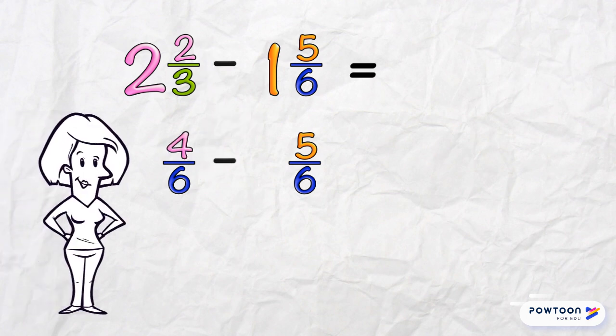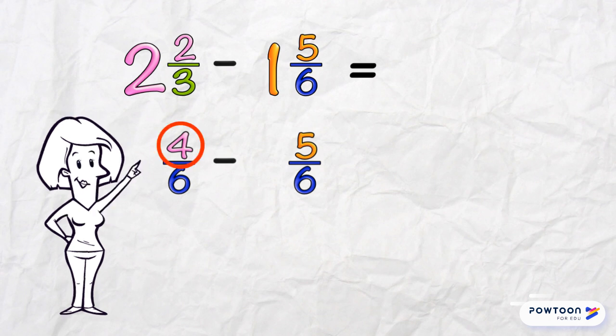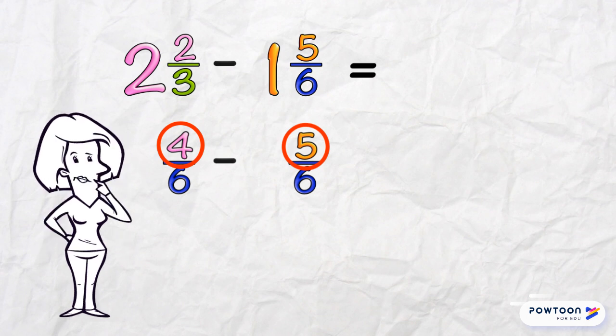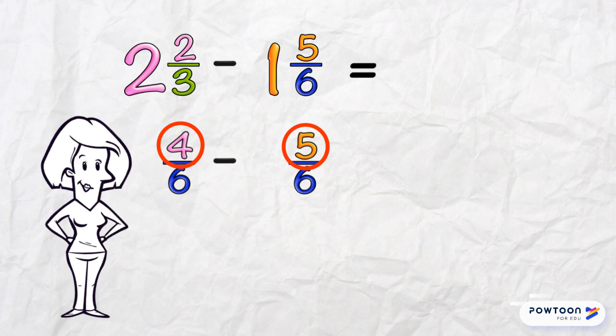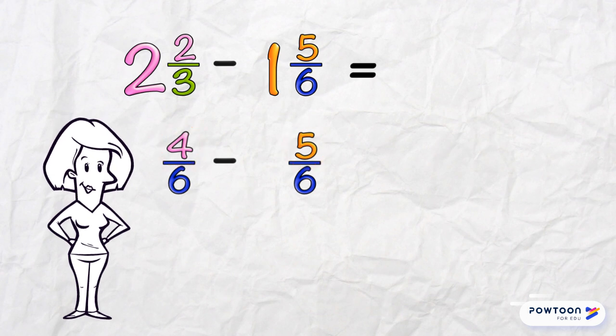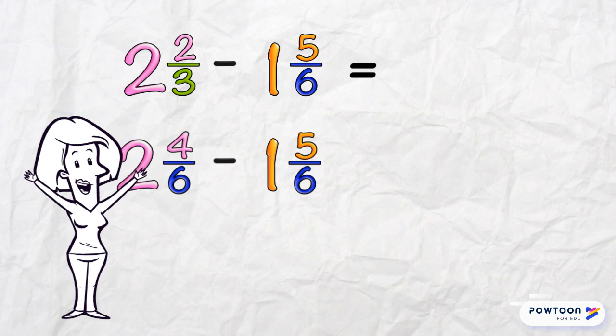And now we've got a problem. In the numerators, we've got 4 here and we have to subtract 5. We can't do it like we did before. This time, we can't separate the fractions from the wholes. Instead, we do this subtraction in one shot. If we change our mixed numbers with that common denominator into improper fractions, we will solve it easily.